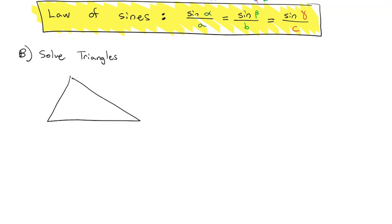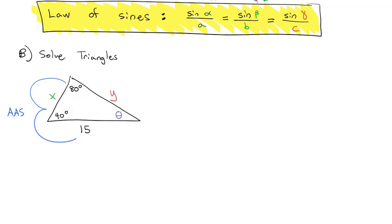Here's another triangle, not drawn to scale. The top angle is 80 degrees, the left angle is 40 degrees, and the bottom side is 15. Notice if we go in order, we've got an angle, an angle, and a side — we call that angle-angle-side. We should be able to solve this triangle for all the missing pieces: a missing side on the left, a missing side on the right, and a missing angle, which we'll call theta.